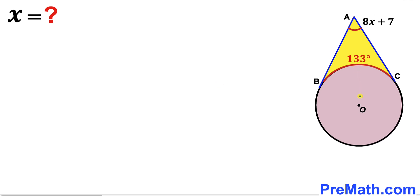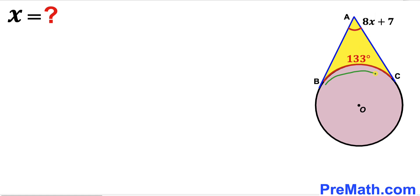Welcome to Premath. In this video we have a circle with center O along with two tangent lines AB and AC, as shown in the diagram. These two tangent lines converge at point A, giving us angle BAC represented by 8x + 7. Furthermore, arc BC is 133 degrees, and our task is to find the value of x.